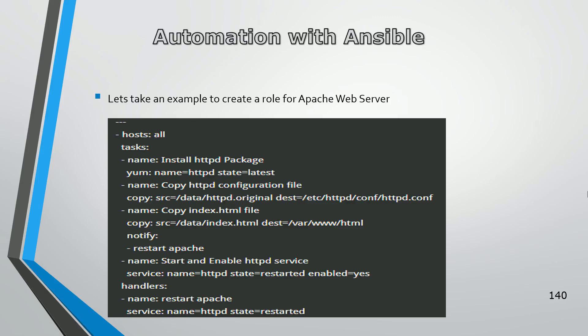Welcome to automation with Ansible. This is a lab session in which we are going to understand how to create a role for Apache web server. The example taken here is the installation of Apache web server using roles. If roles are not there and we have to create a simple playbook, let's understand what the playbook looks like and then we'll create a role for that.